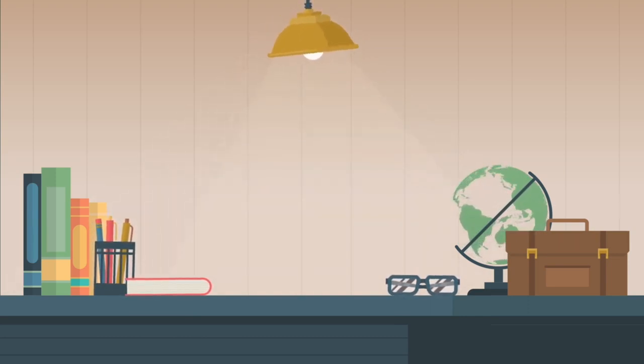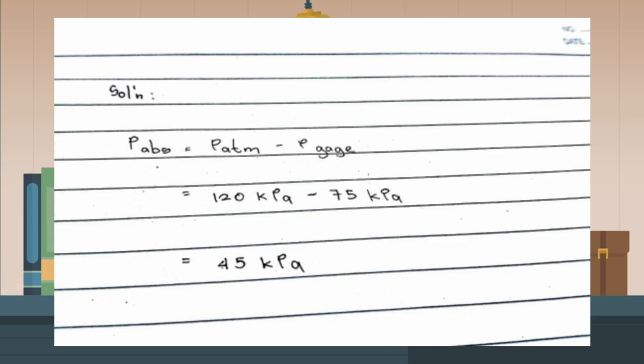To find P absolute, we're gonna use the formula: P absolute equals P atmosphere minus P gauge.